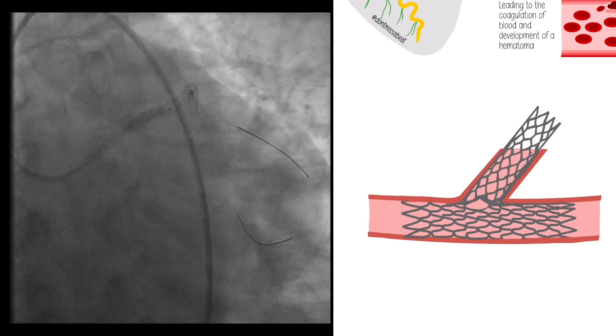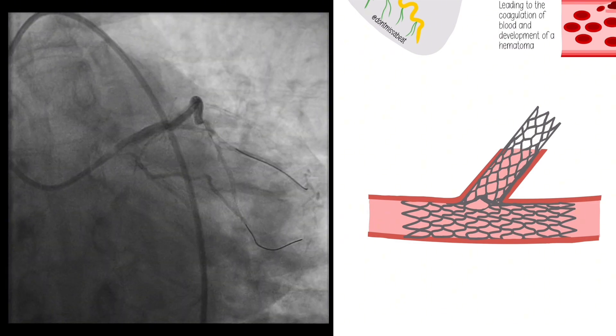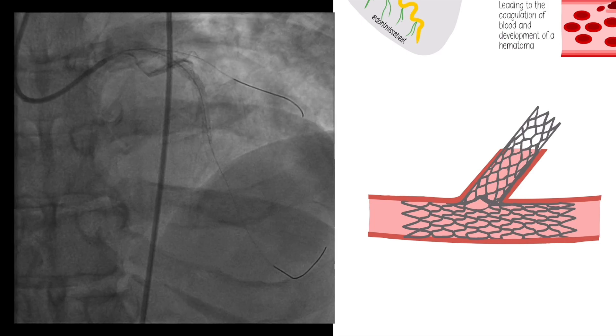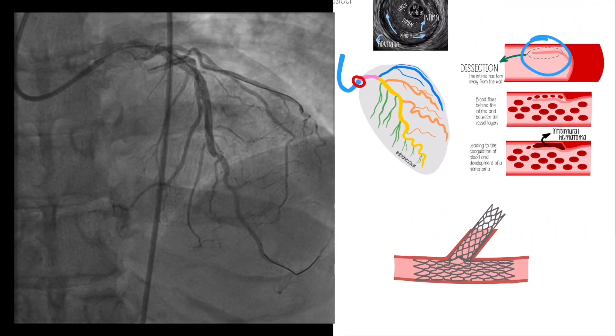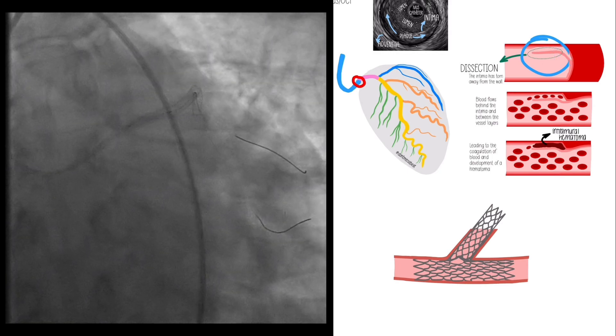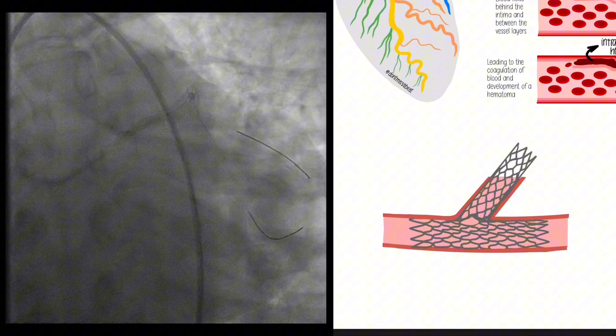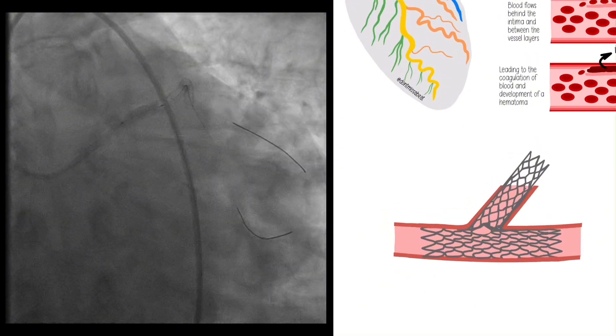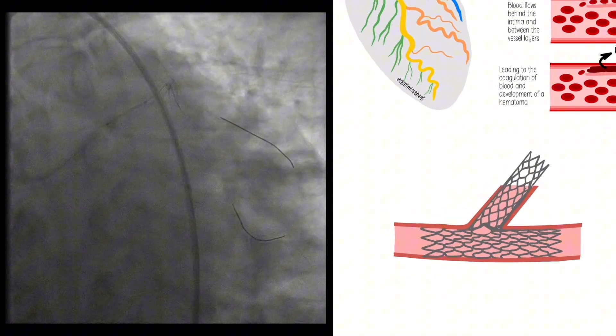Even just inflating a balloon in a vessel that has high plaque burden is, in a way, causing micro dissections on purpose. They're controlled dissections. We stent over them so that they don't have open flaps like this. That's why we don't just balloon, we also stent to keep the vessel open, to cover up any of these little things that we caused. Just like when a patient goes for bypass, they have to get a sternotomy. You kind of have to break things in order to fix them first, to get to them. Same concept here.